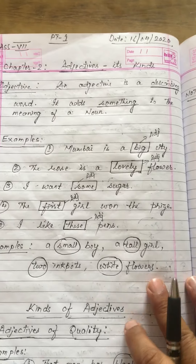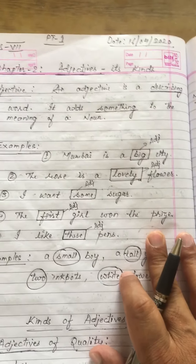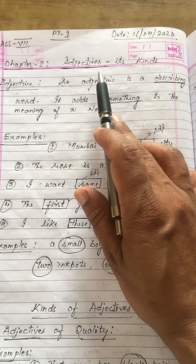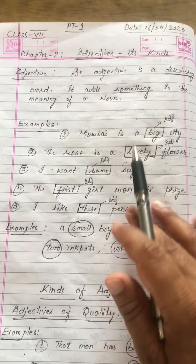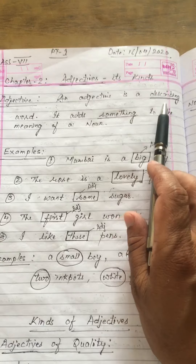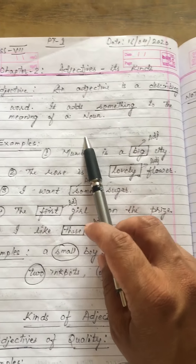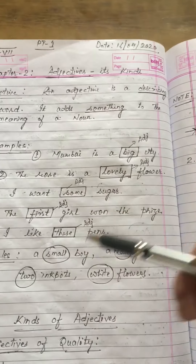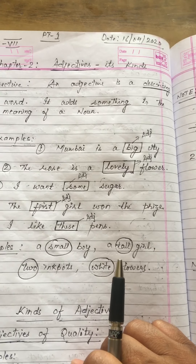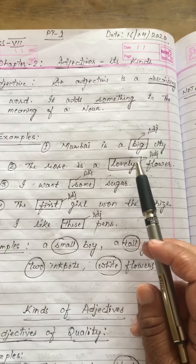Hello students, welcome back to your WhatsApp classes. Today we are going to study Chapter 2: Adjectives and its Kinds. First of all, what is an adjective? An adjective is a describing word — it adds something to the meaning of a noun. In other words, adjectives are words which tell something about a noun or a pronoun.